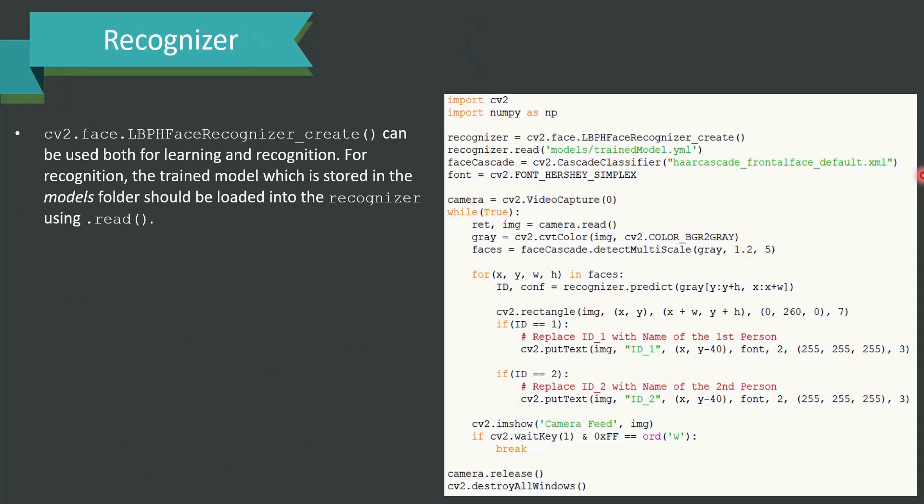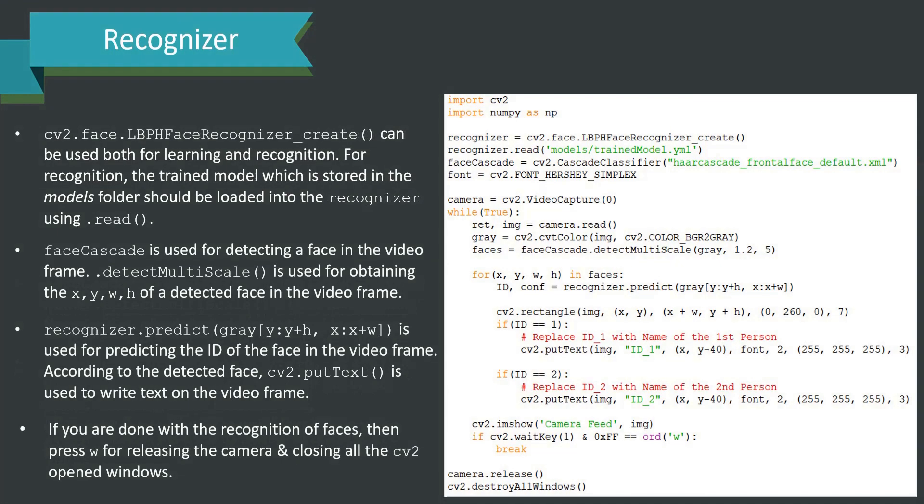Recognizer. The most important component recognizer is coming into picture here. cv2.face.LBPHFaceRecognizer_create can be used for both learning and recognition. For recognition, the trained model which is stored in the models folder should be loaded into the recognizer using .read. cv2.face_cascade is used for detecting a face in the video frame. .detectMultiScale is used for obtaining the x, y, w and h of a detected face in the video frame. recognizer.predict with gray in the bracket y, y plus h, x, x plus w is used for predicting the id of the face in the video frame. According to the detected face, cv2.putText is used to write the text on the video frame. All these are to be followed meticulously and if any mistakes are made in between or if any process is missed, it might result in errors. If you are done with the recognition of faces, then press W for releasing the camera and closing all the cv2 open windows.